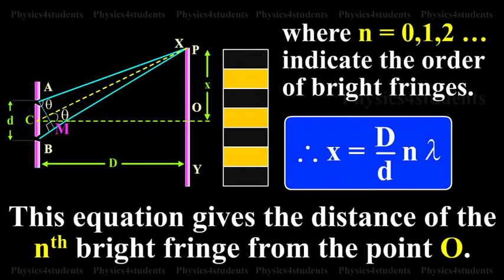Therefore, x is equal to D by d into n lambda. This equation gives the distance of the nth bright fringe from the point O.